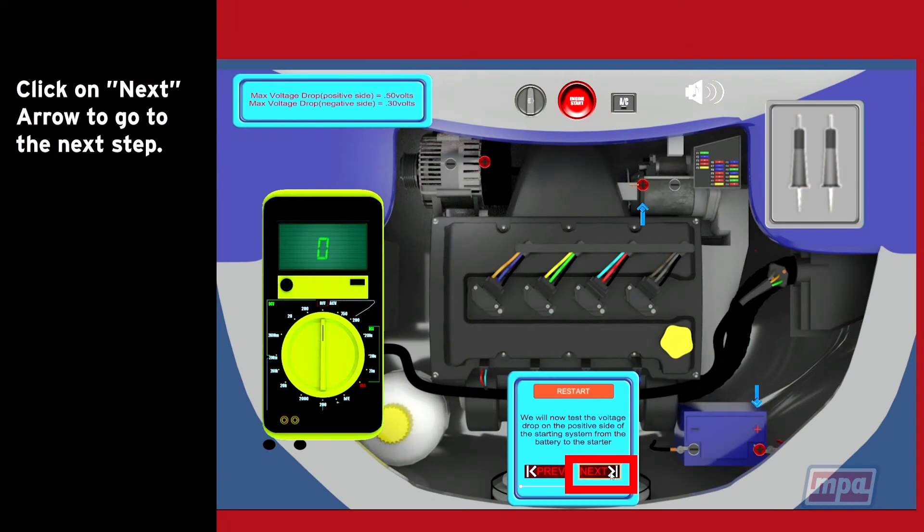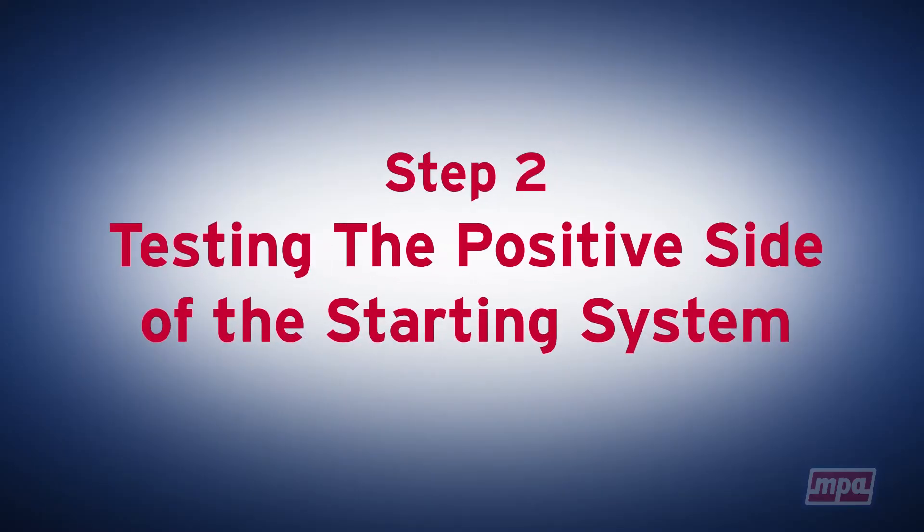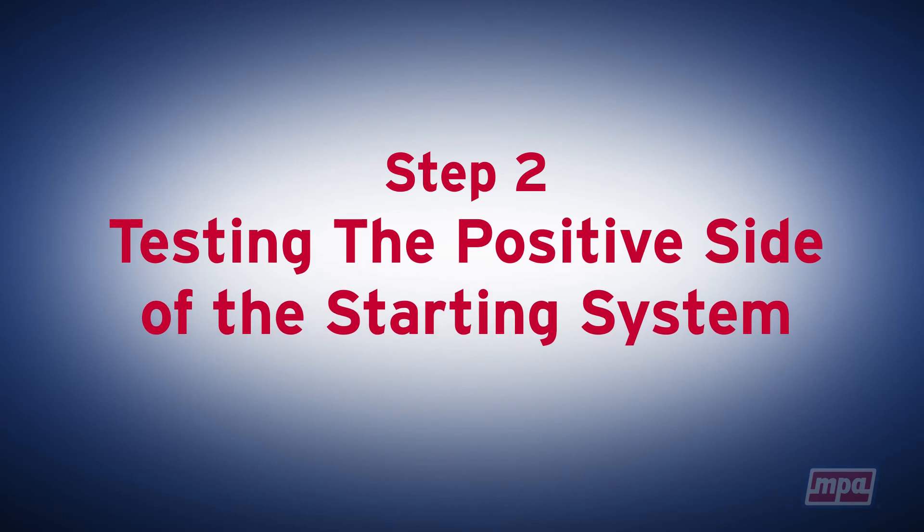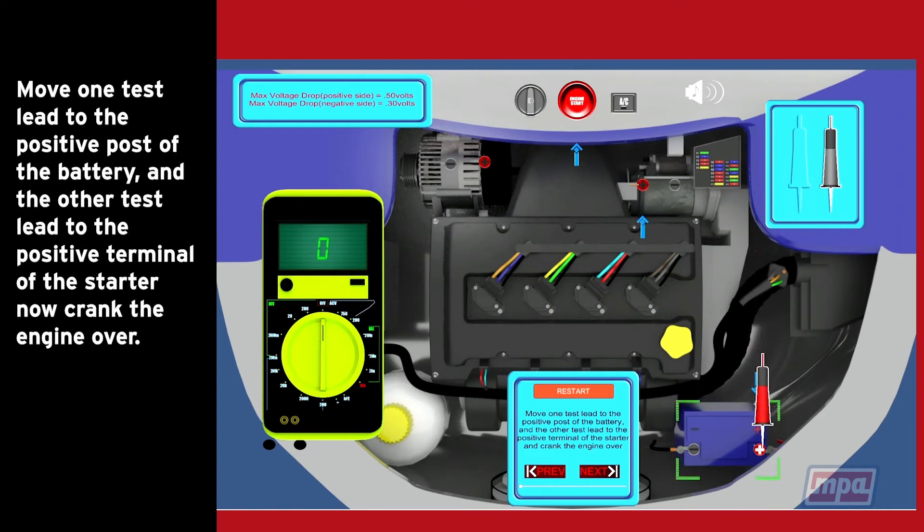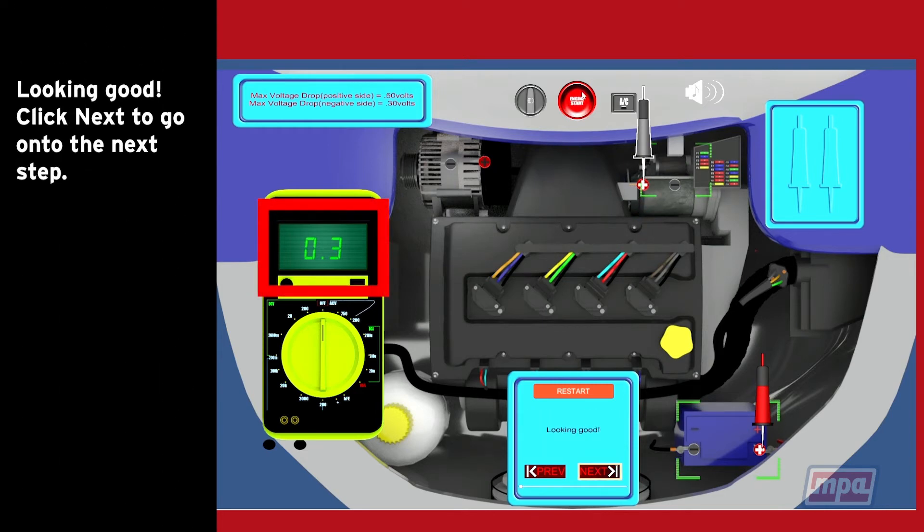Click on the next arrow to go to the next step. Step 2: Testing the positive side of the starting system. We will now test the voltage drop on the positive side of the starting system from the battery to the starter. Move one test lead to the positive post of the battery and the other test lead to the positive terminal of the starter. Now crank the engine over. Looking good. Click next to go on to the next step.